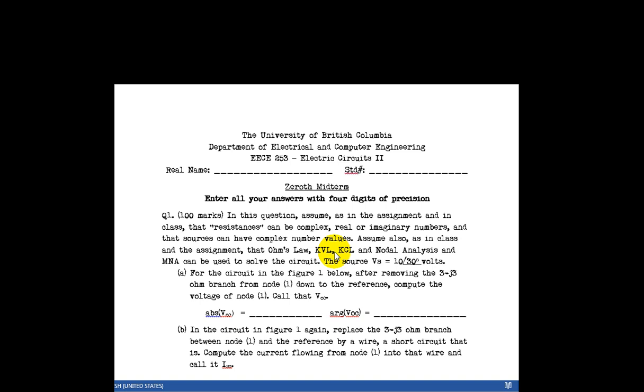At this point, students have never seen phasors or complex number representations of impedances or anything like that. No, they've used only resistors and DC sources. And the premise is, what if resistances had complex number values, and the same with sources.